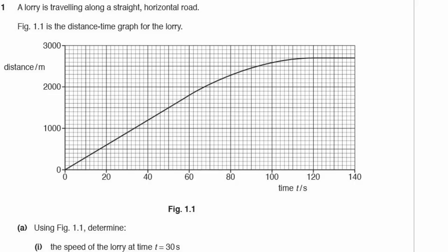Question 1. A lorry is travelling along a straight, horizontal road. Figure 1.1 is the Distance-Time Graph for the lorry. The key point is we have a Distance-Time Graph — the gradient will give us the speed.